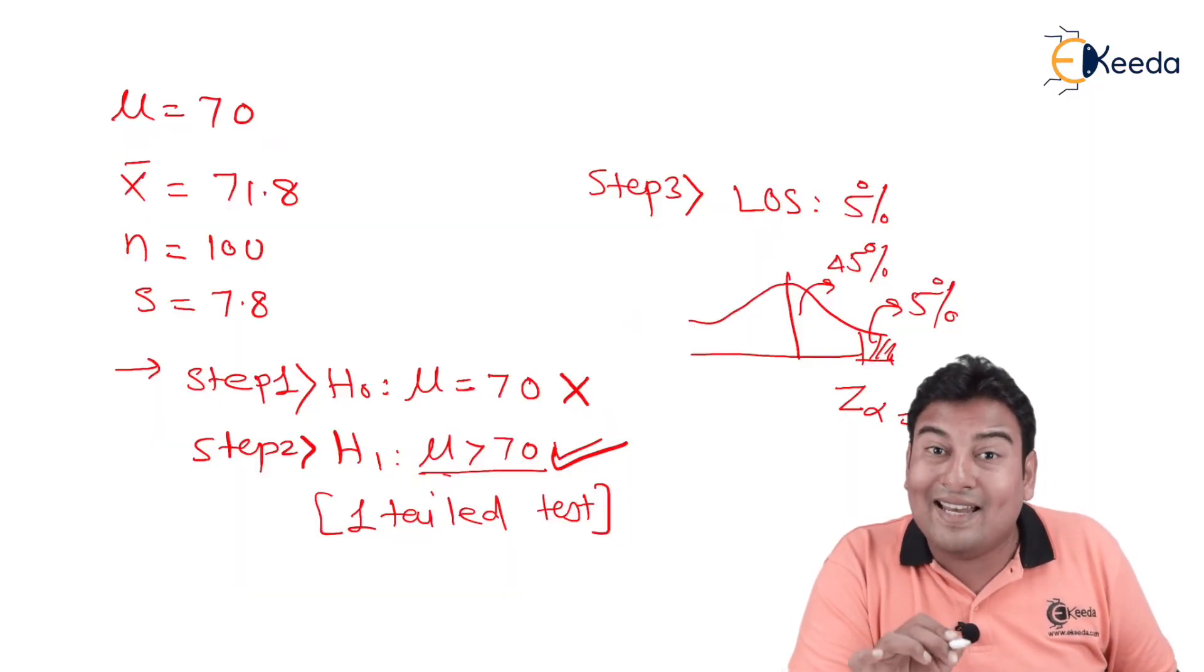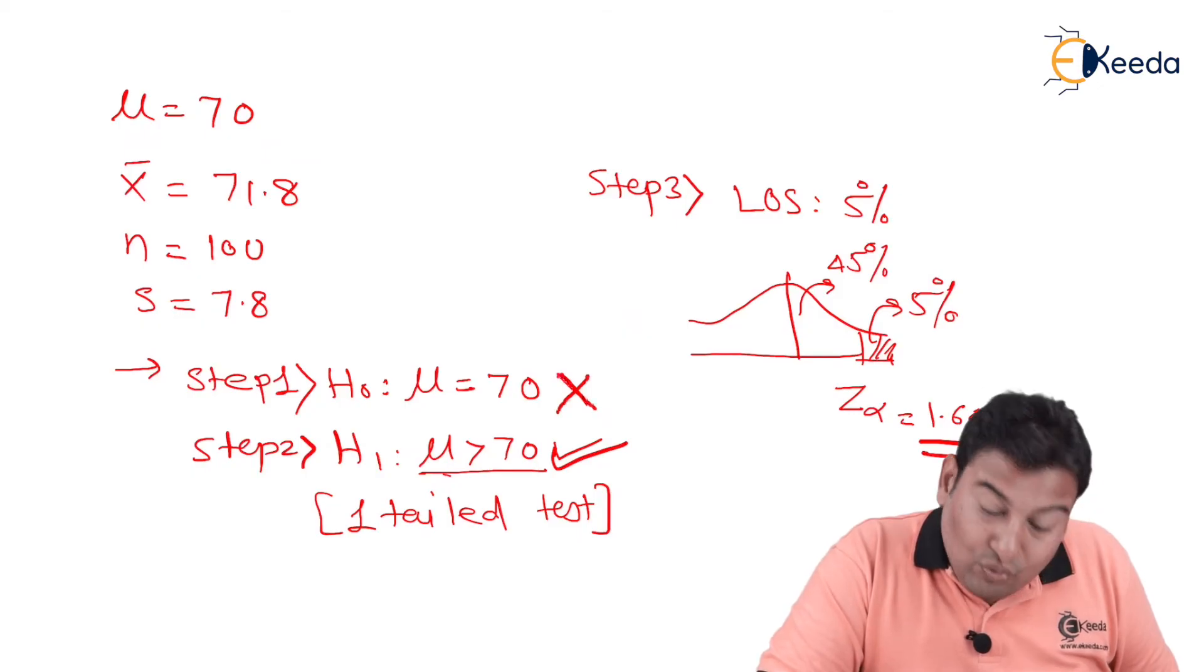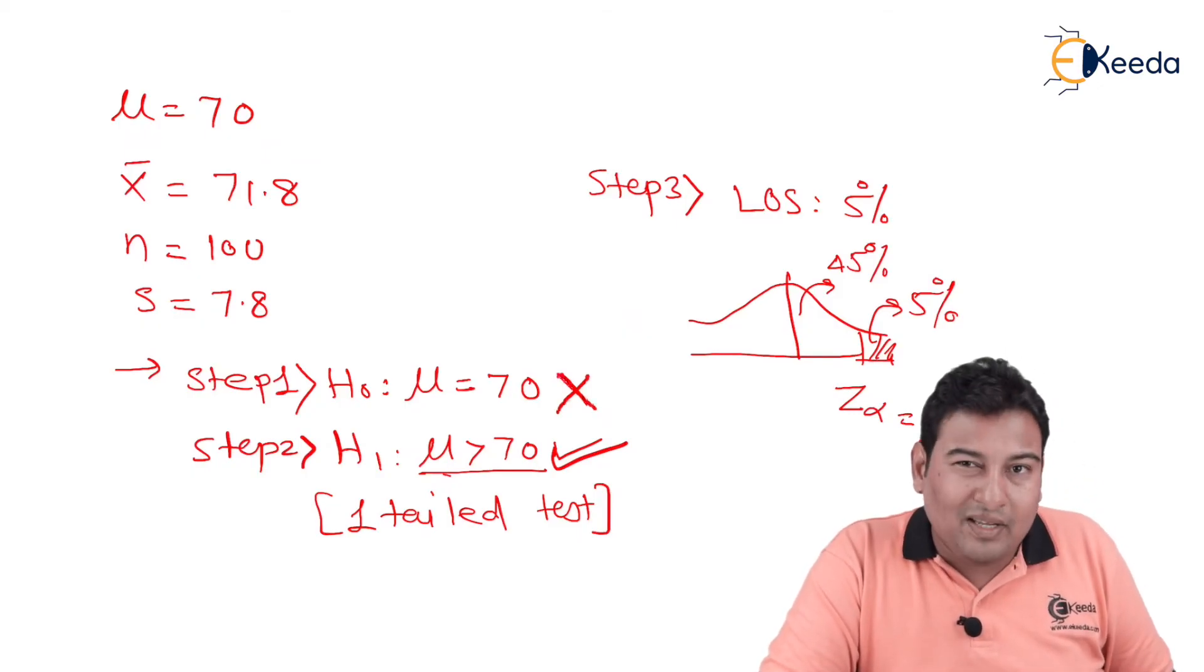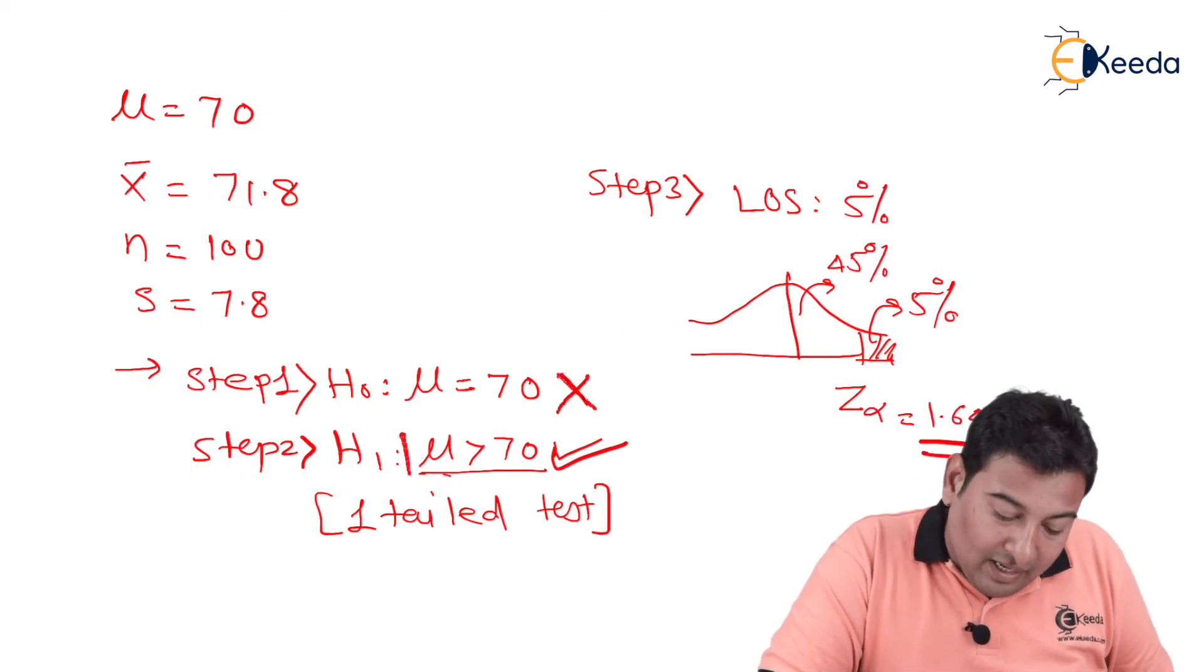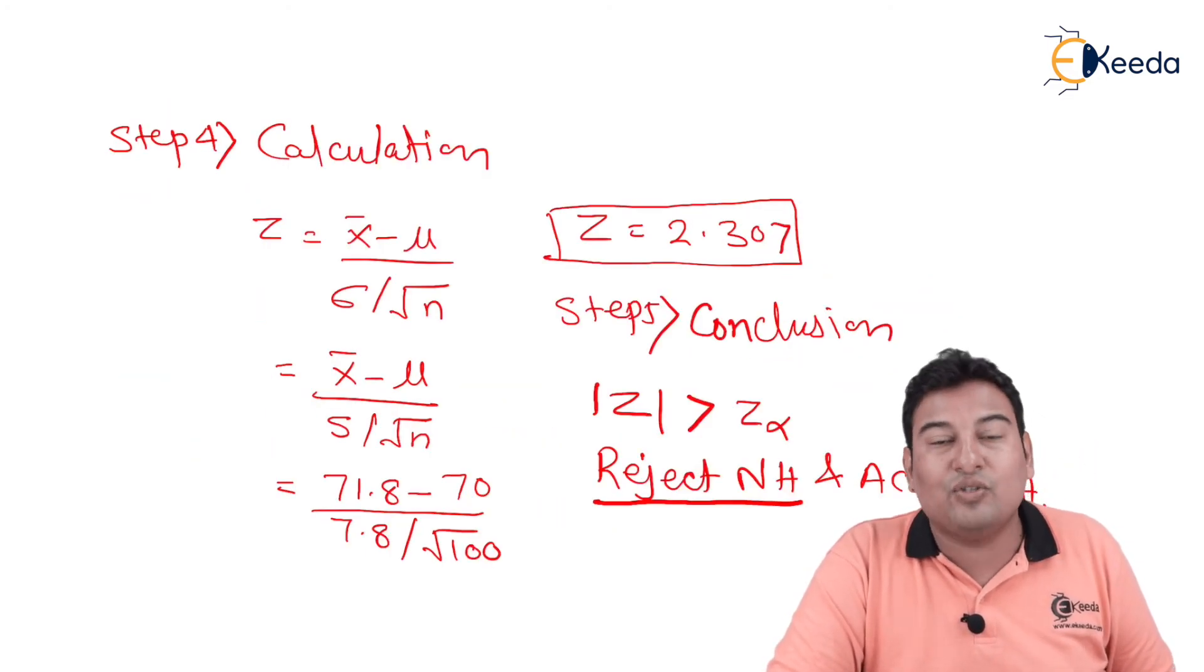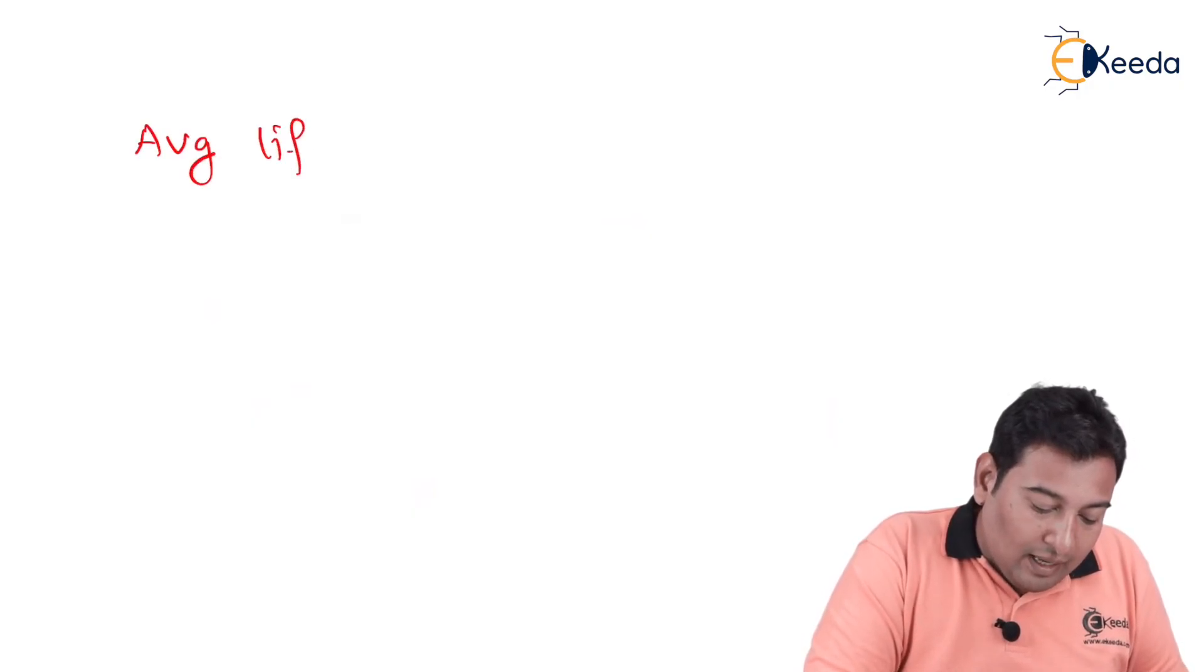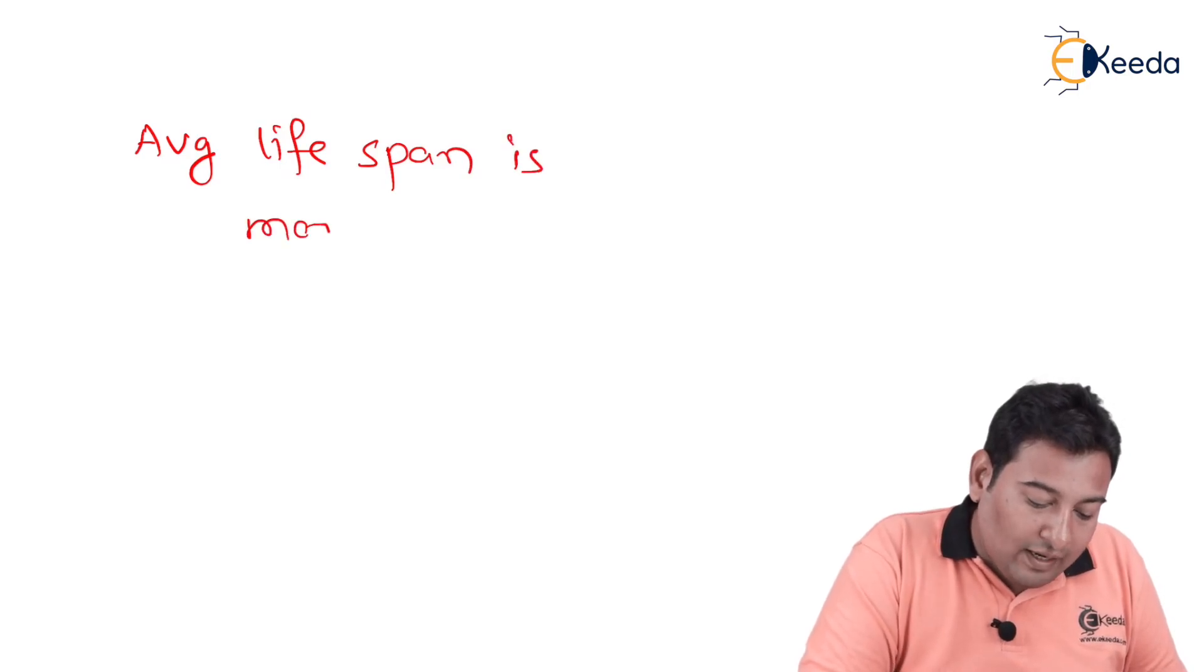You need to see, this conclusion is based on NH and AH. So you're rejecting NH, that means you're rejecting this part, and you're accepting AH, that means you're accepting this part, that means you're accepting μ greater than 70. So that means your final conclusion should be average lifespan is more than 70 years.